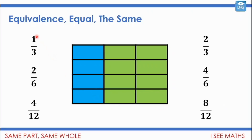Now have a look at this pattern: one in three, then two in six — how many twos go into six? It's three. And four in twelve — how many fours in twelve? It's three as well.